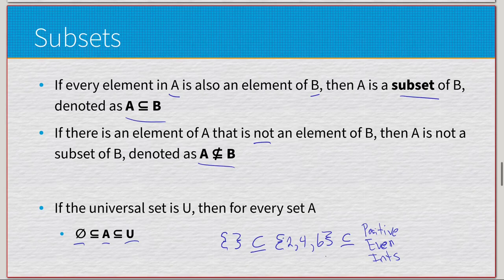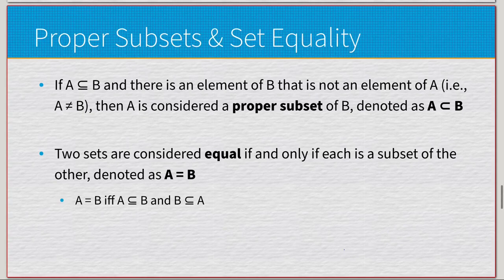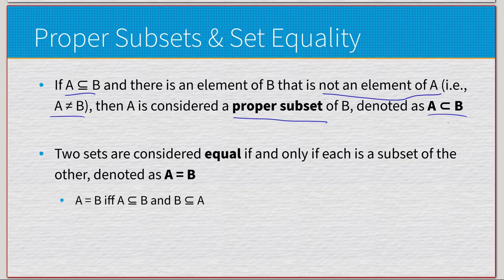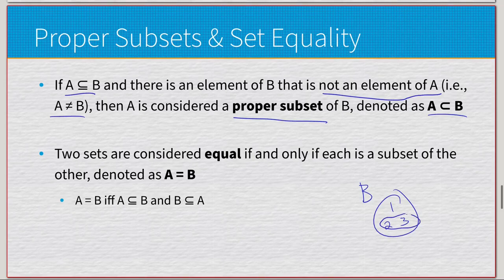For example, if the universal set is all positive even integers, then a set like {2, 4, 6} would be a subset of that universal set, and the empty set is always a subset of any set. Moving on, every subset relationship is one of two special types. If A is a subset of B and there is an element of B not in A — meaning A does not equal B — then A is a proper subset of B, denoted with the sideways U without the bar underneath.